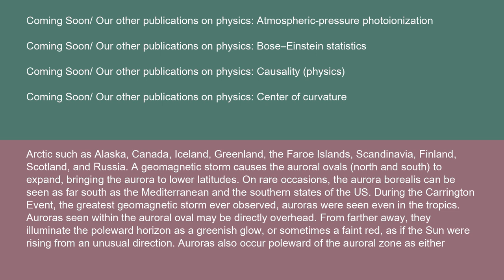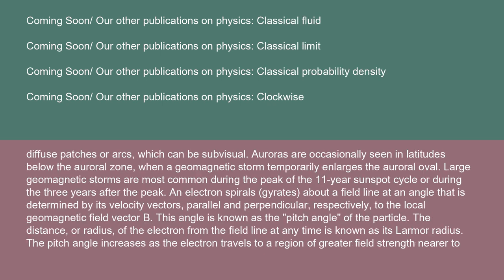Auroras seen within the auroral oval may be directly overhead. From farther away, they illuminate the poleward horizon as a greenish glow or sometimes a faint red, as if the sun were rising from an unusual direction. Auroras also occur poleward of the auroral zone as diffuse patches or arcs, which can be subvisual. Large geomagnetic storms are most common during the peak of the 11-year sunspot cycle or during the three years after the peak.